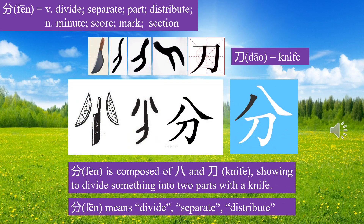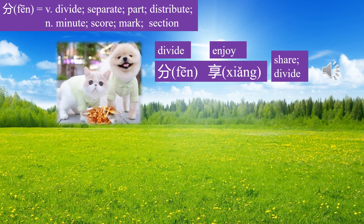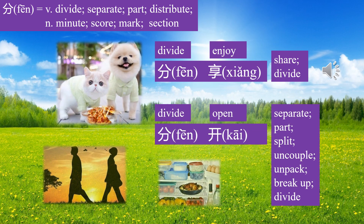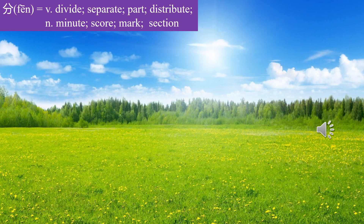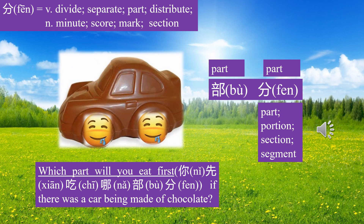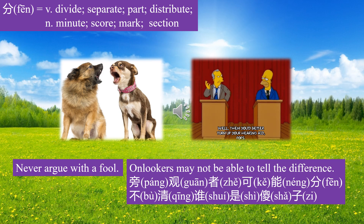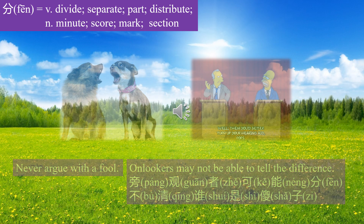Character 分 means divide, separate, distribute, minute. 分享 means share. 分开 means separate. 部分 means part. Which part will you eat first if there is a car made of chocolate? The wheels, of course. Never argue with a fool — onlookers may not be able to tell the difference. 旁观者可能分不清谁是傻子.